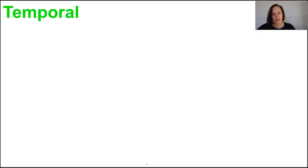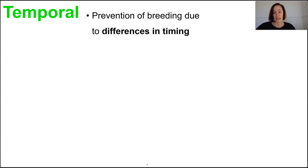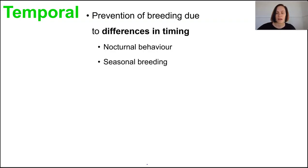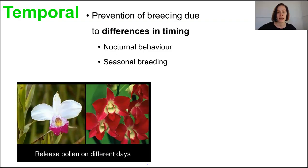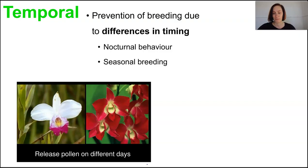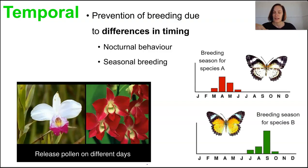Temporal mechanisms of isolation refer to the prevention of breeding due to some kind of mismatched schedule. Animals that are nocturnal, or that breed in different seasons or cycles that don't overlap, are prevented from mating. Flowering plants have different times of year when they can pollinate. There's a genus of cicada that spends many years underground as juveniles and emerges to breed, but different species spend different amounts of time underground — somewhere between 13 to 17 years. So if their cycles differ and schedules don't line up, there's no breeding, and those subpopulations become isolated.